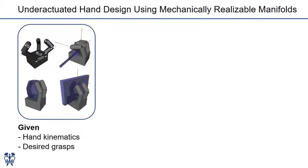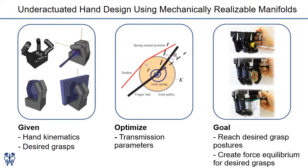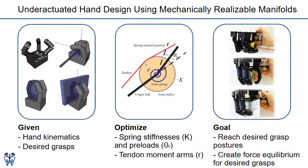Let's formalize our problem. First of all, we assume we are given a hand kinematic configuration and a set of desired grasps, and we wish to optimize the transmission parameters which determine the hand kinematic and force behaviors. Our goals are to first reach desired grasp postures, and second create force equilibrium for such grasps. The specific transmission parameters to optimize are the spring stiffness, the preload angle, and the tendon moment arm in each joint. Different parameters contribute to different aspects of our objectives.